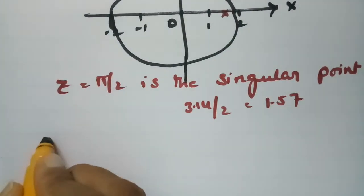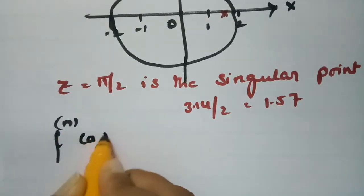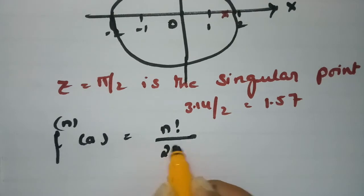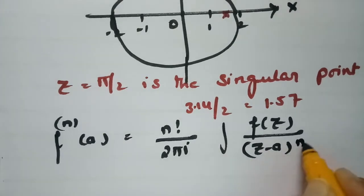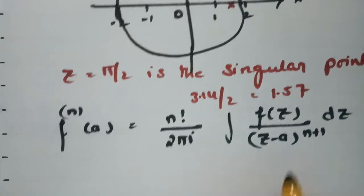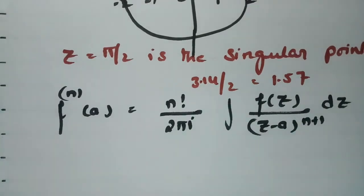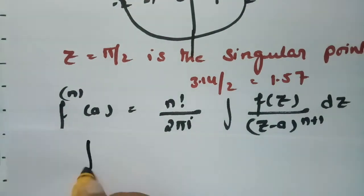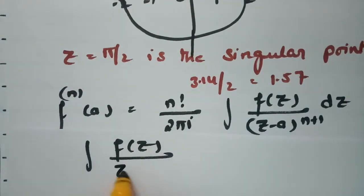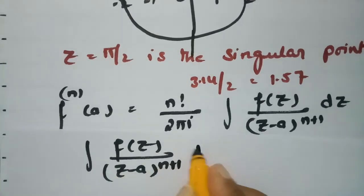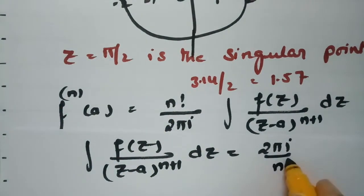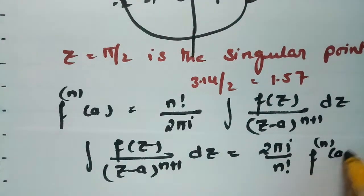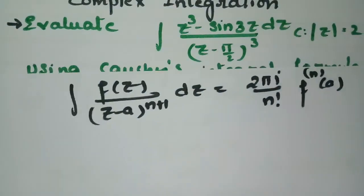According to Cauchy's integral formula, the nth derivative at point a is given by: f⁽ⁿ⁾(a) = n!/(2πi) · ∫ f(z)/(z − a)^(n+1) dz. Rearranging, the integral ∫ f(z)/(z − a)^(n+1) dz = (2πi/n!) · f⁽ⁿ⁾(a).